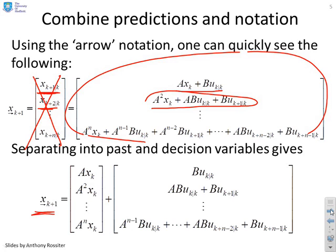I can say again, you'll see there's my notation, x right arrow k plus 1, and then I've got this vector, A xk, A squared xk, all the way down to A^n xk. That's the bit that I know, based upon the current state. And then I have this other bit, which is just based on future inputs.